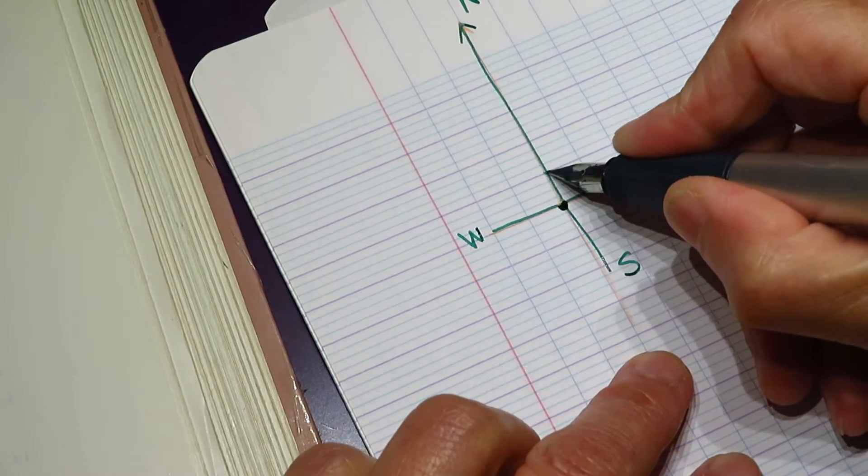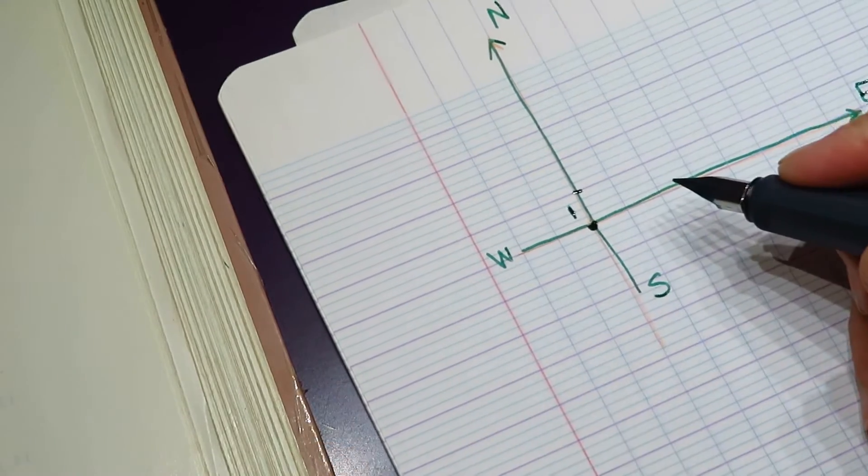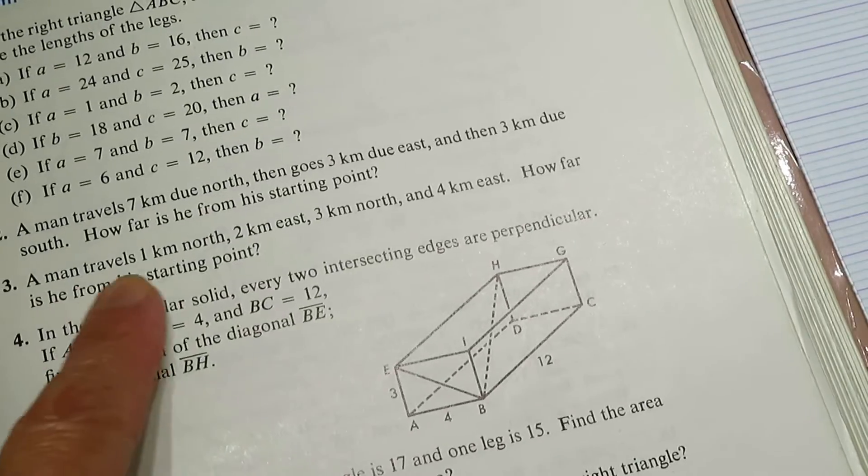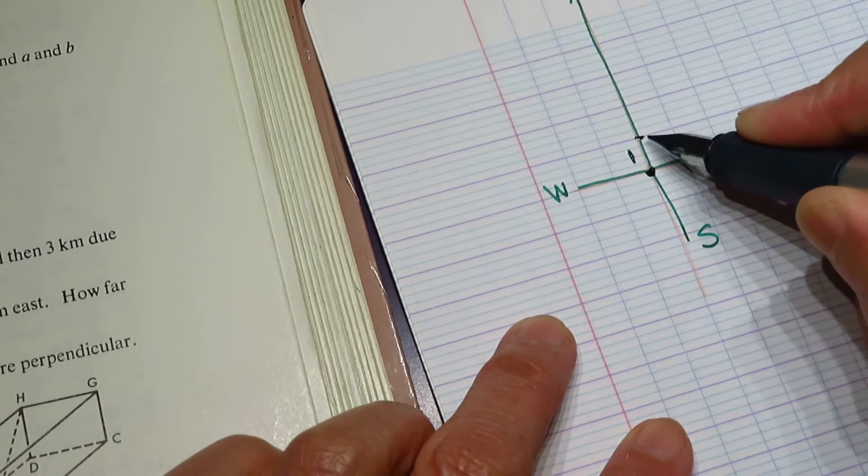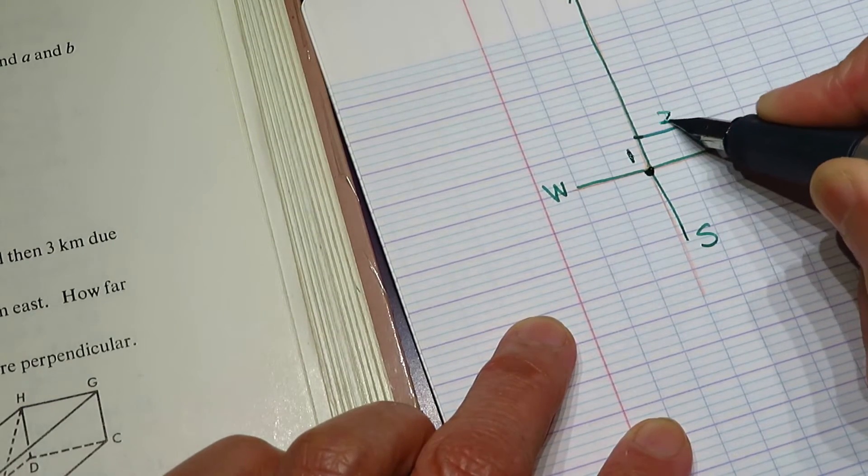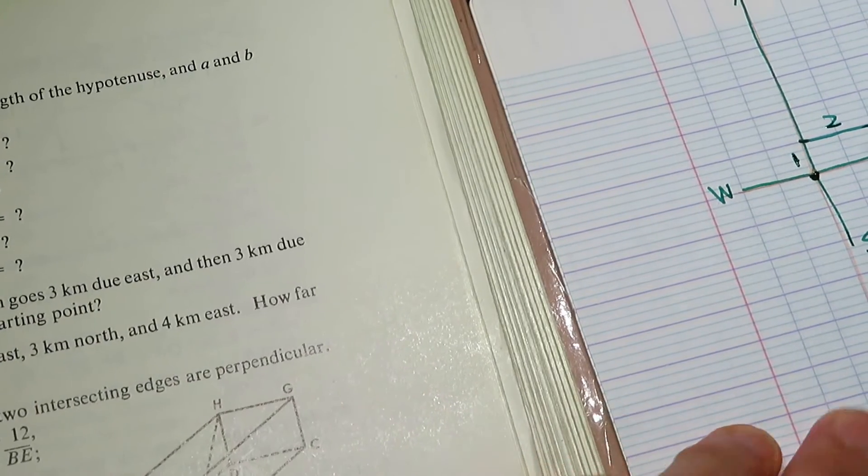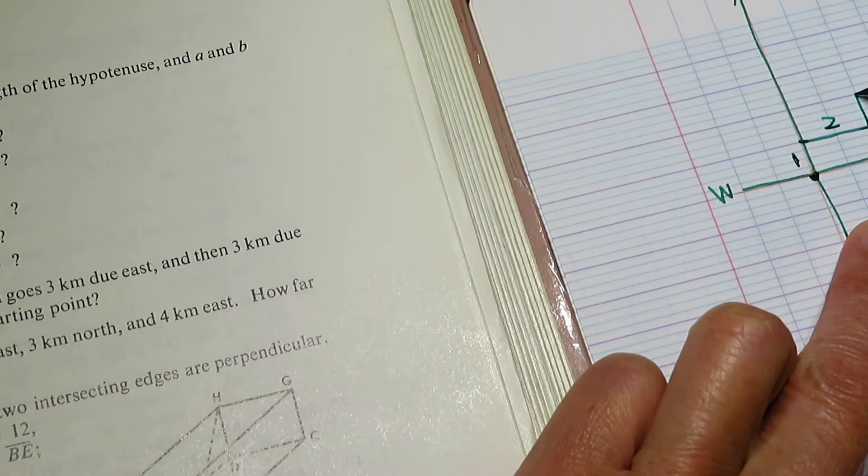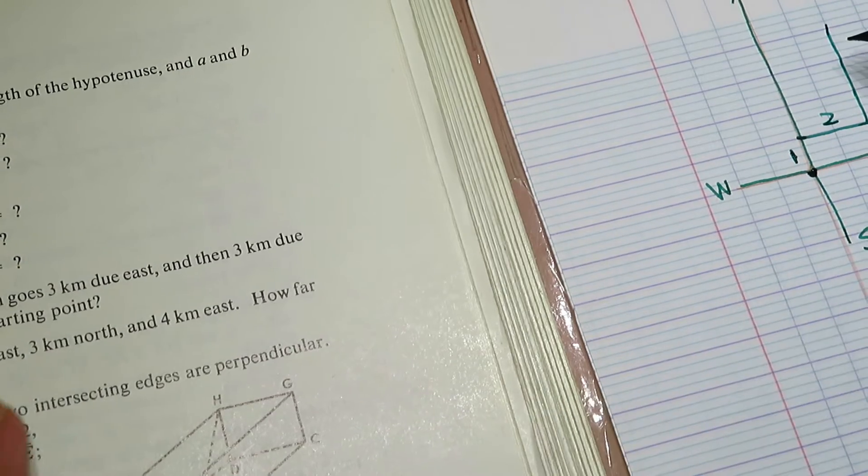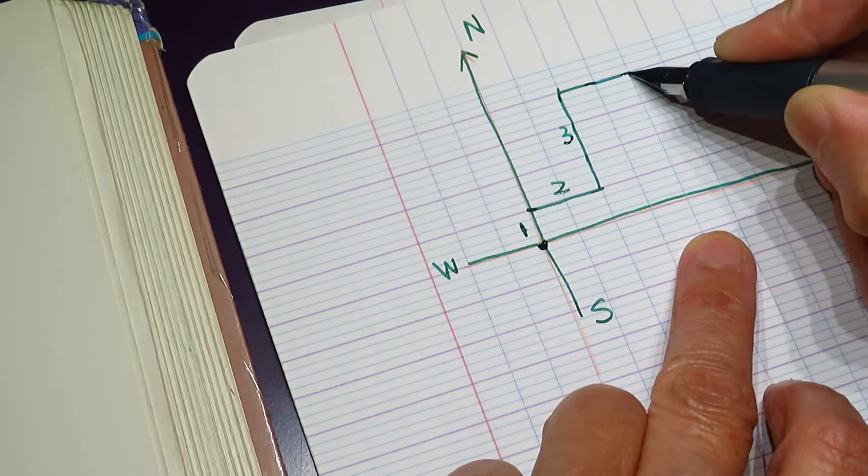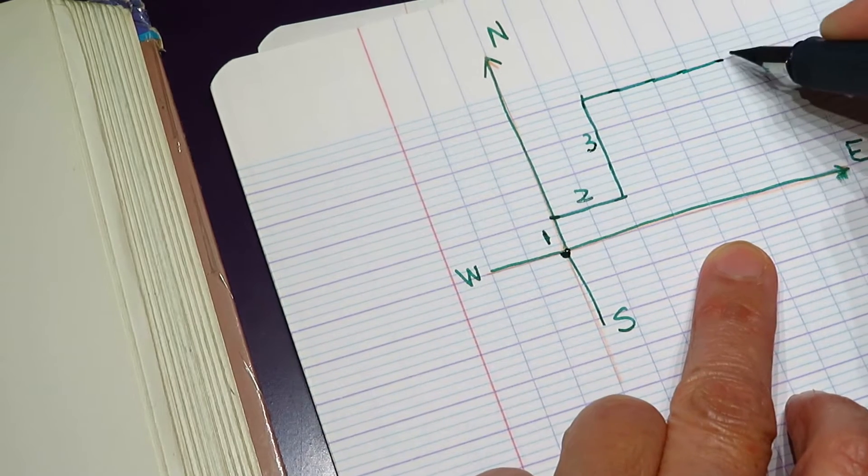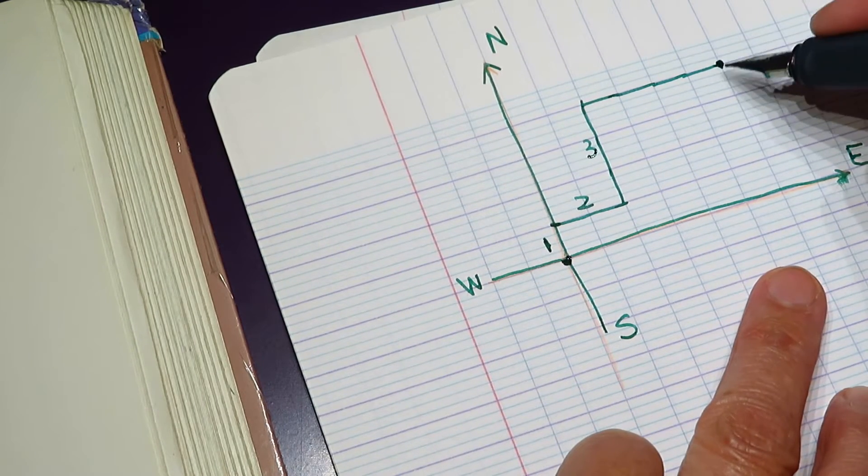He started from here. North, south, west, east. So first he goes north one kilometer, then two kilometers east, then three kilometers north, and then four kilometers east. One, two, three, four. So he finally reached this new point.